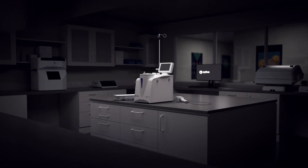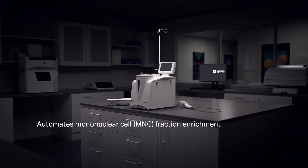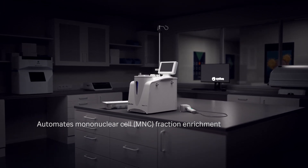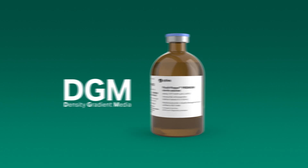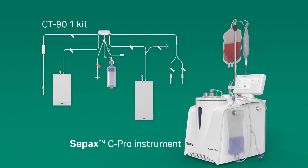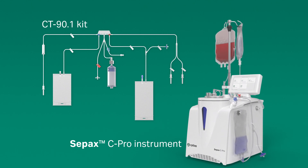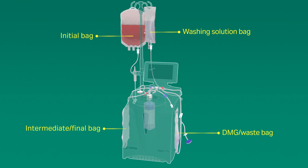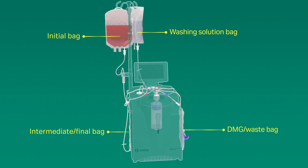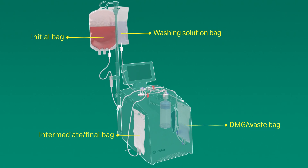The NeatCell C-Pro application automates the mononuclear cell fraction enrichment from diverse cellular products. The application is designed for use with a density gradient medium like FICOL PAC media with the CPAC C-Pro instrument and CT 90.1 single-use kit. NeatCell C-Pro replicates your manual process by combining the MNC isolation and washing steps in a closed and automated procedure.